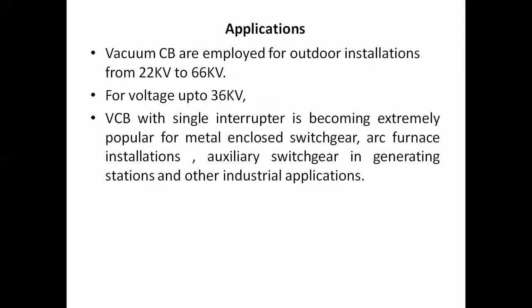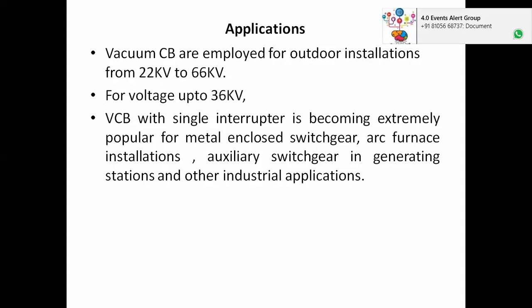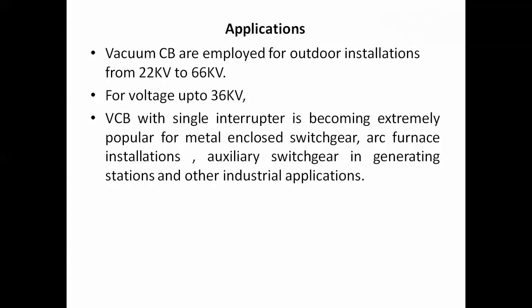Vacuum circuit breakers are employed for outdoor installation up to 22 kV to 66 kV, and can also be installed for voltages up to 36 kV. VCB with a single interrupter is becoming extremely popular for metal-enclosed switchgear, arc furnace installations, and switchgear in generating stations and other industrial applications. As mentioned, VCB has a very wide range of application parts and can be used in generating stations, grid stations, and substations. One of the most important features is that it requires very little maintenance because there is no separate arc quenching media present. The operation reliability and efficiency are very high, making it suitable for numerous applications.